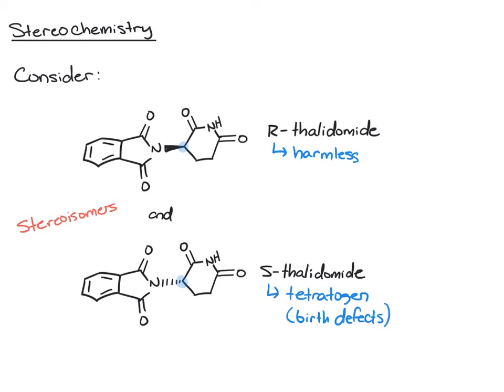So what this example does is it paints a picture to show us how important the three-dimensional structure of molecules is. And we're going to see that through some other examples later on. But this particular case here actually led to the strict drug approval process that the FDA currently undergoes for any drugs. But also, any time a pharmaceutical company now makes a molecule that can have different stereoisomers, every stereoisomer has to be prepared independently and tested independently.